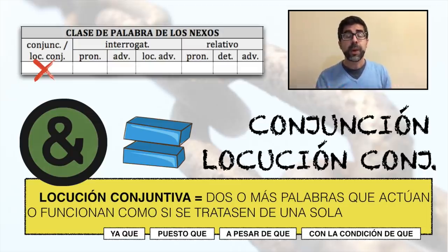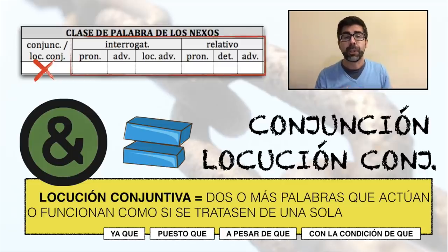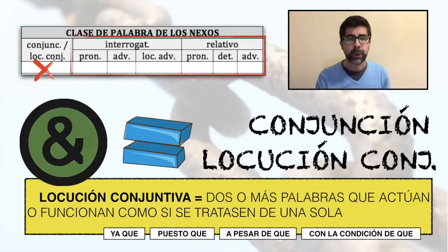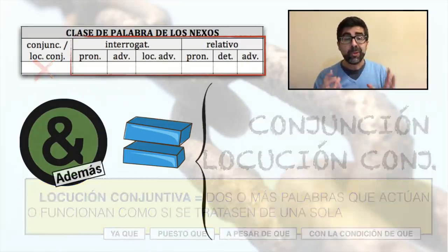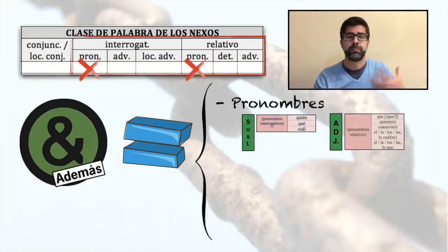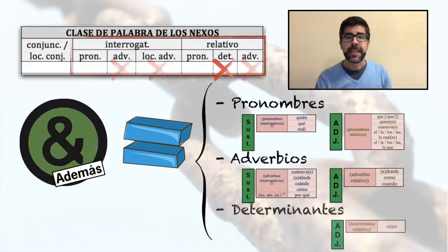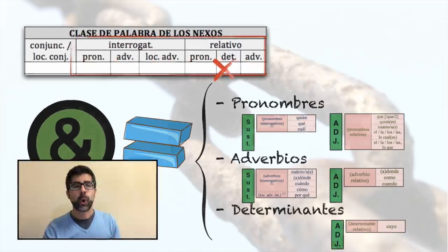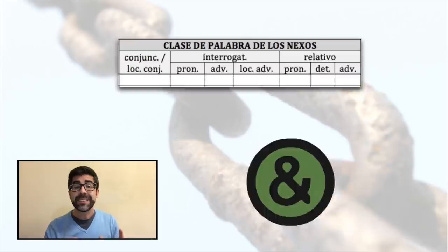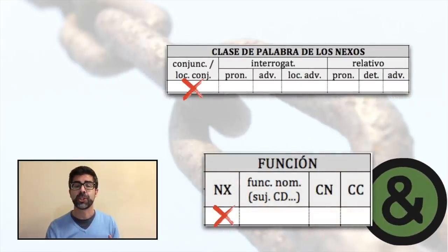Pero en función de Nexo hay muchas otras palabras aparte de las conjunciones, sorprendentemente. Pues esta función en verdad le corresponde a las conjunciones, pero en función de Nexo también tenemos pronombres, adverbios y hasta determinantes. Saber distinguirlos es fundamental, pues las conjunciones desempeñan exclusivamente la función de Nexo, pero estos últimos no.